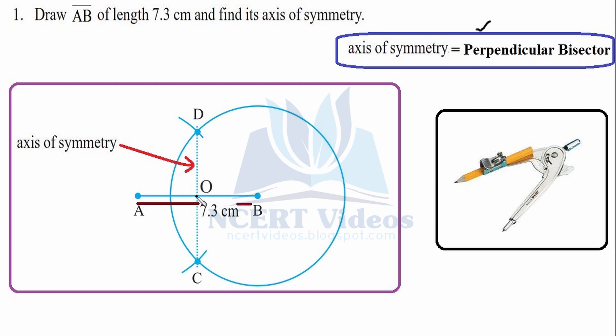Connect the two points with a dotted line. This is your required perpendicular bisector, or axis of symmetry. It divides the 7.3 cm into two equal parts, namely AO and OB. This was your first question.